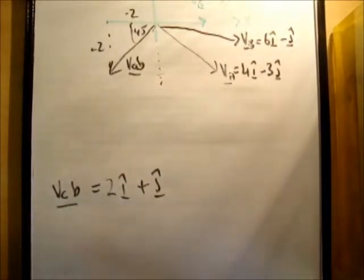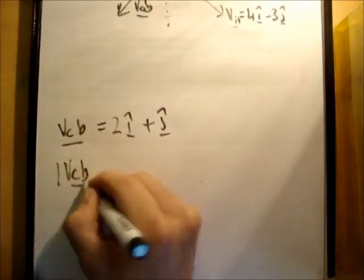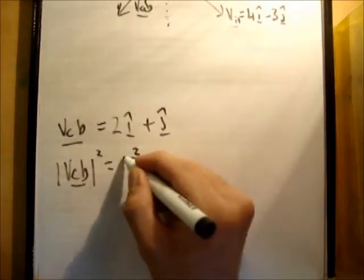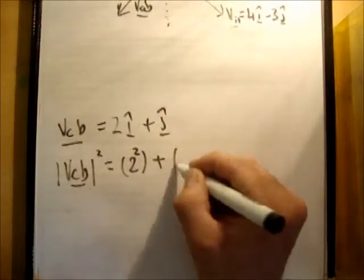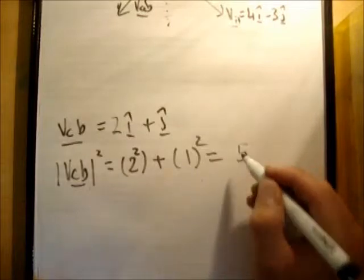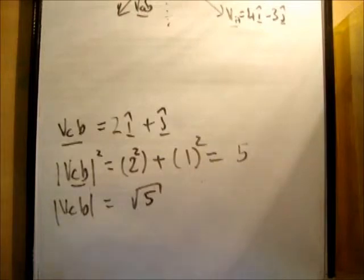So if we want to get the magnitude of this, we need to use a bit of Pythagoras. So we go magnitude of VCB squared is equal to 2 squared plus 1 squared is equal to 5. So therefore VCB is equal to square root 5.